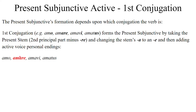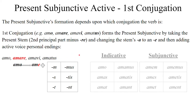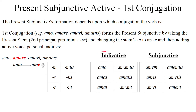So it looks something like this. We have amo, amare, amavi, amatus. Second principal part: amare. Chop off the -re, change that A to an E, and add the personal endings: -m, -s, -t, -mus, -tis, -unt. I've included the indicative for comparison. So in the present indicative we have: amo, amas, amat, amamus, amatis, amant. You can see the difference — it looks different, kind of sticks out, looks odd.